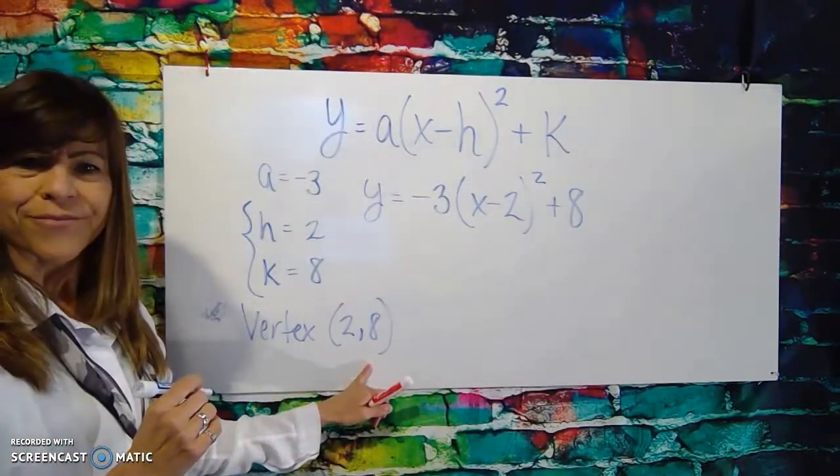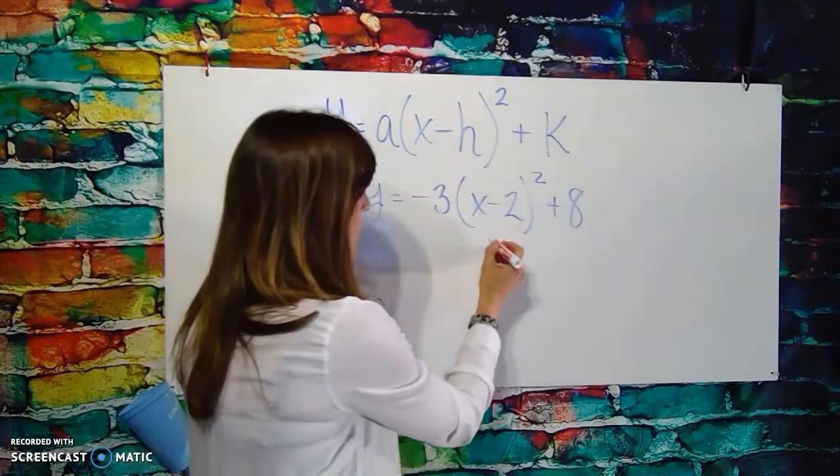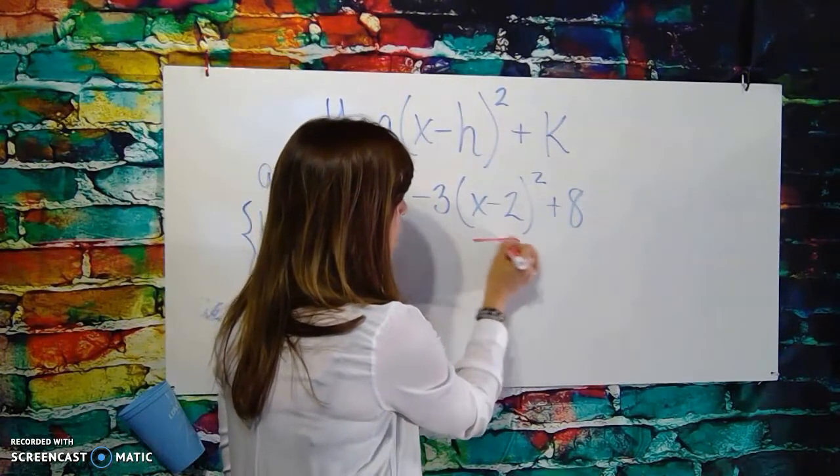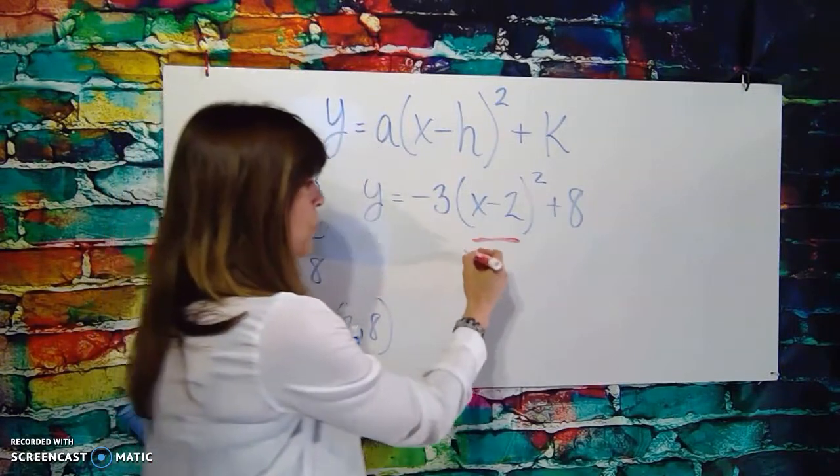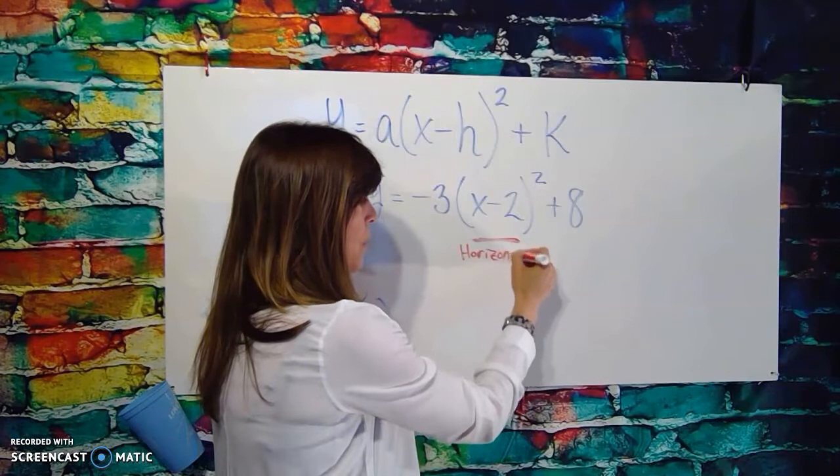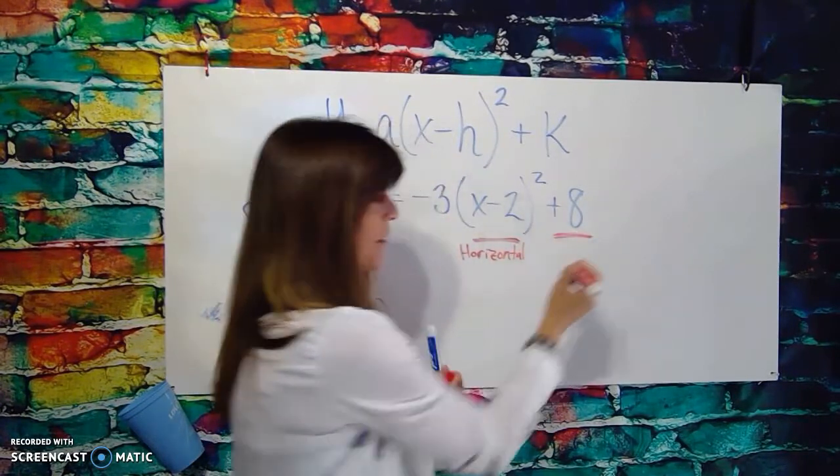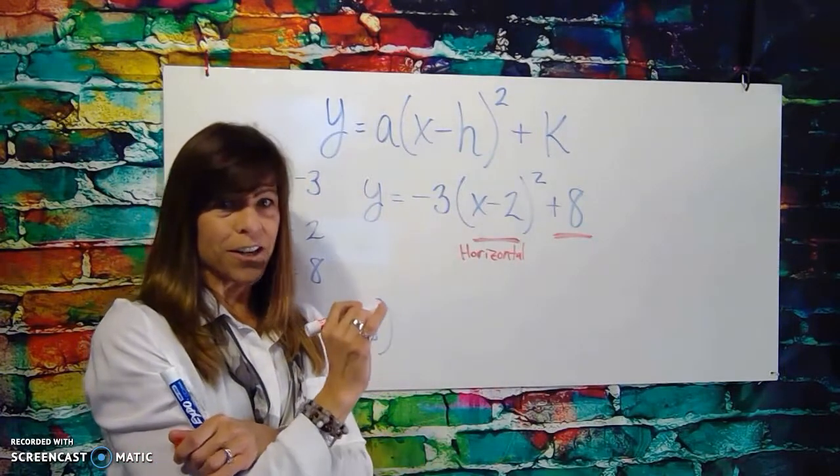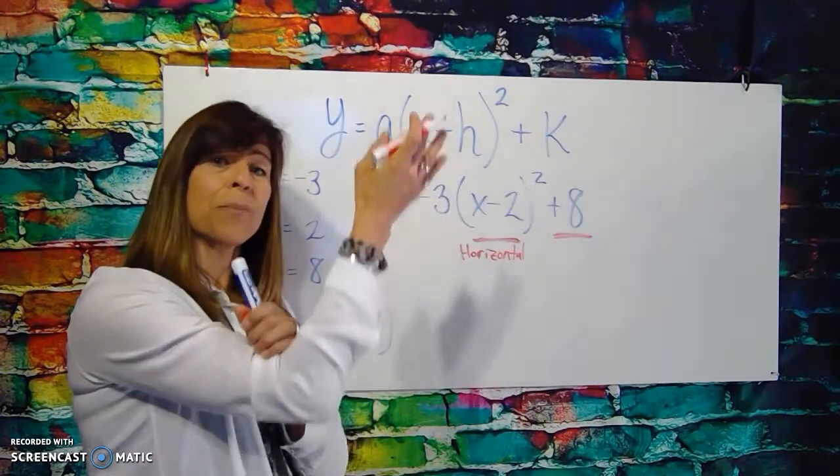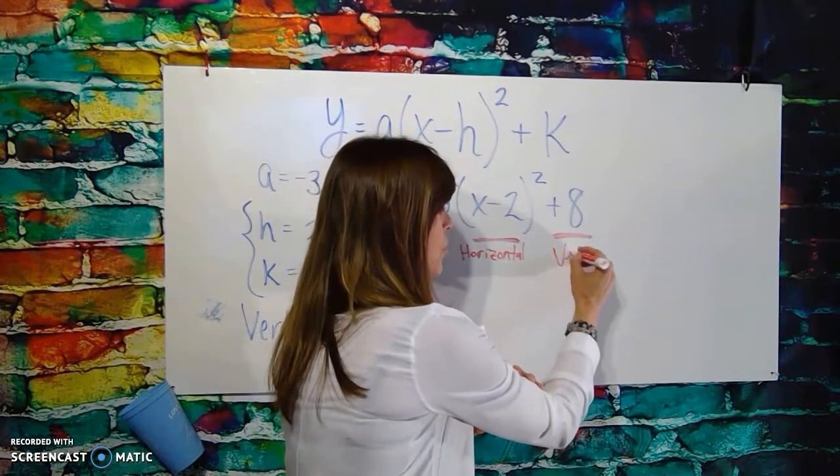There you go. So this part of our expression, this part of our expression helps us to know how we move horizontally from our original parent function. This part, that part of our equation, helps us to know how much we move the parabola up and down. So that's the vertical shift.